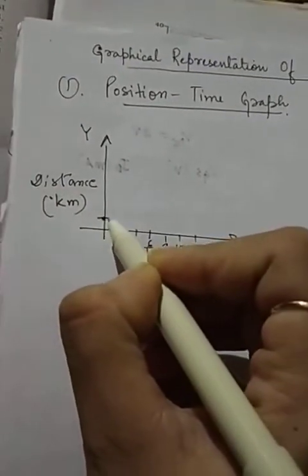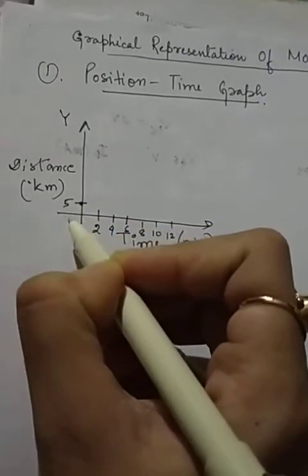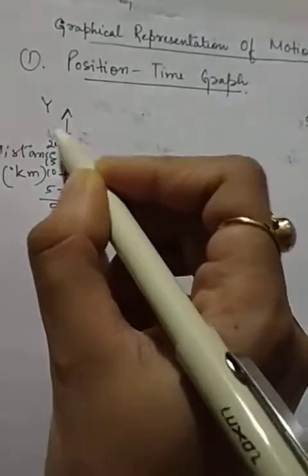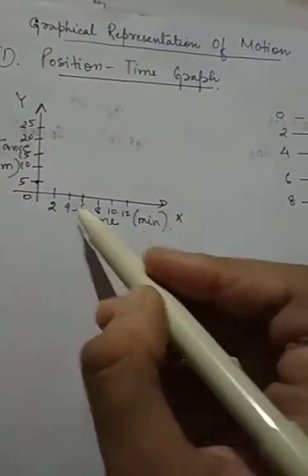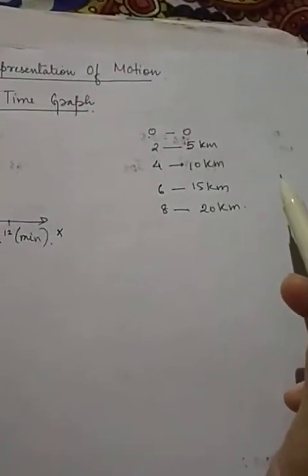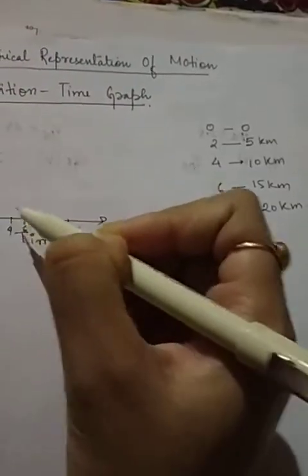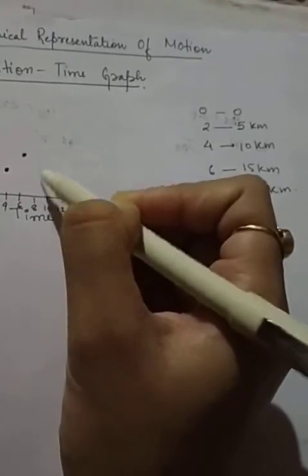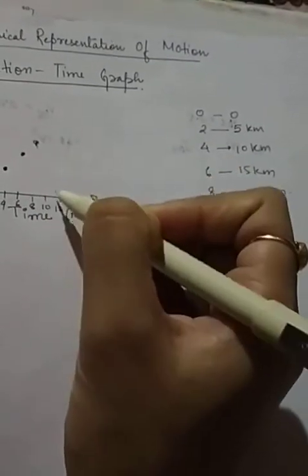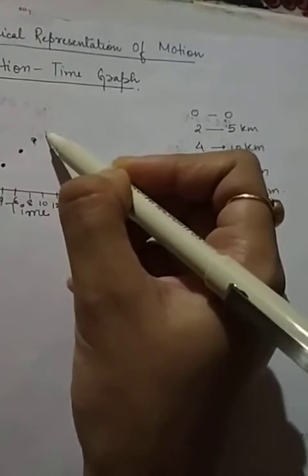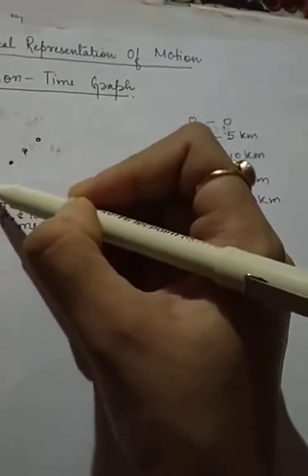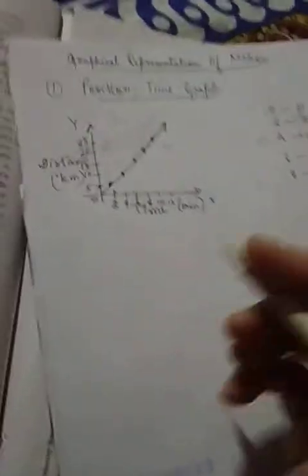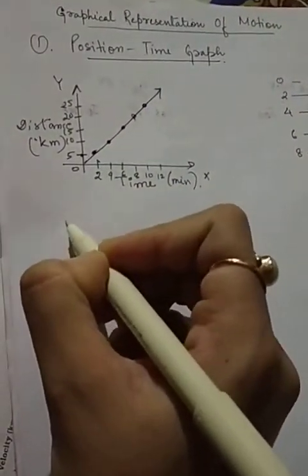Now represent this on a graph. Suppose this is 0, this is 10, this is 15, this is 20, this is 25. At 4 minutes you are at 5 km, at 6 minutes you are at 10, at 8 minutes you are at 15, at 10 minutes you are at 20, at 12 minutes you are at 25. So what do you see? This graph is a straight line.